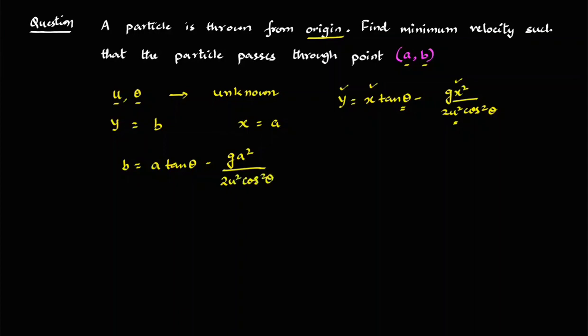Now, as I discussed earlier also in one of the problems that how to use the quadratic equation, I know that this is variable cos theta and tan theta is variable or theta is variable. So we'll make a quadratic equation in form of tan theta or cos theta. So let me just try to change this B is equal to A tan theta minus G A square upon 2U square and cos square can be written as sec square theta and that will be one plus tan square theta.